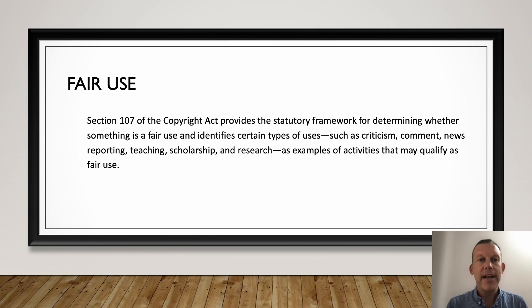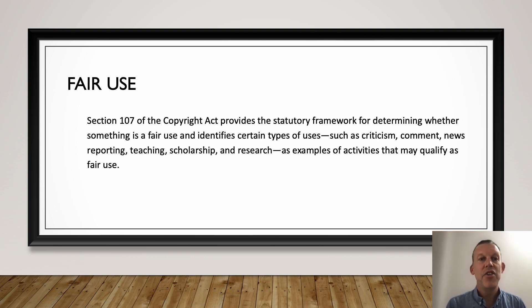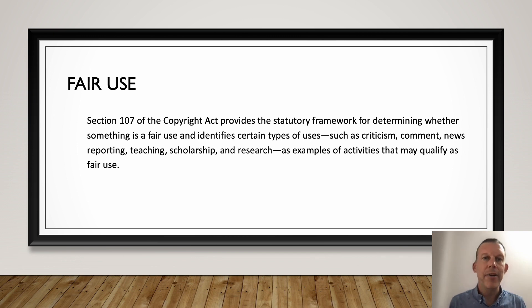Section 107 of the Copyright Act provides the statutory framework for determining whether something is a fair use, and identifies certain types of uses — criticism, comment, news reporting, teaching, scholarship, and research — as examples of activities that may qualify. These are all for the public good; these are things that we do that make this world a better place.